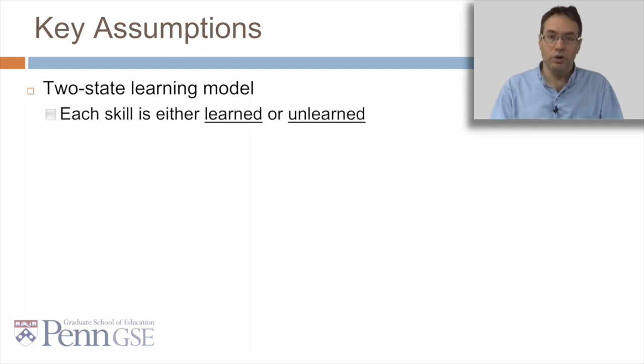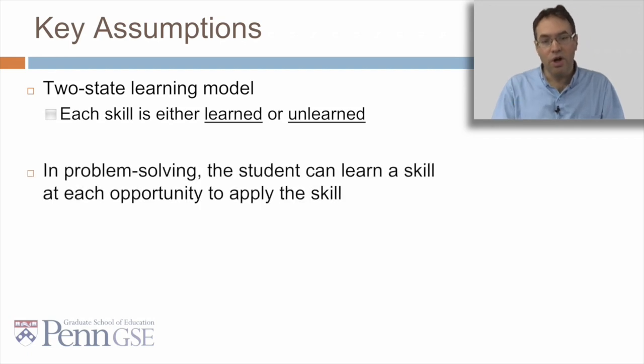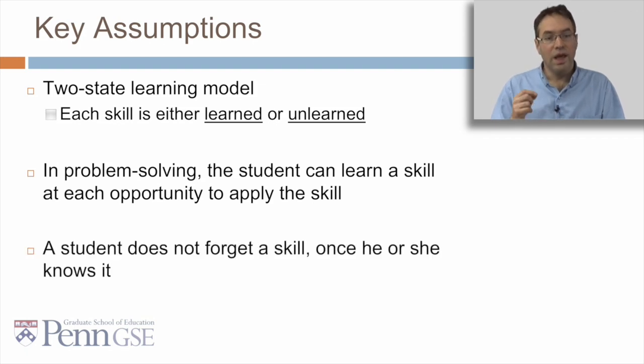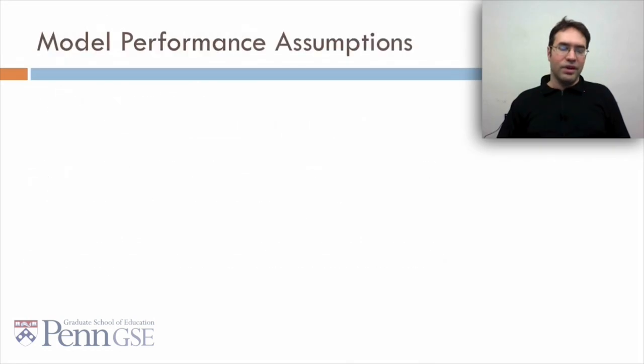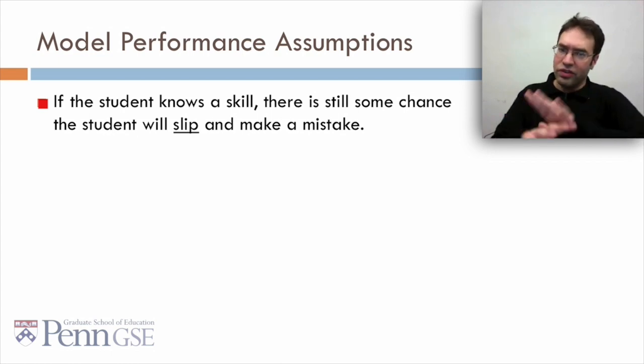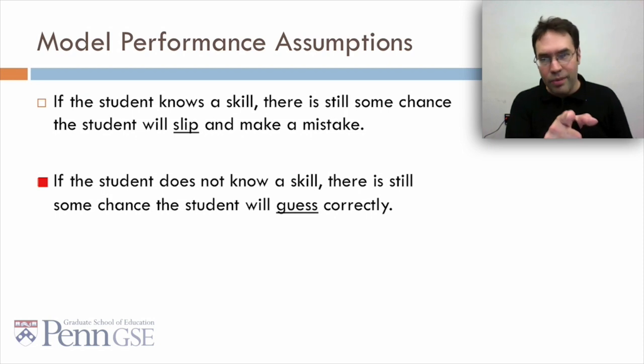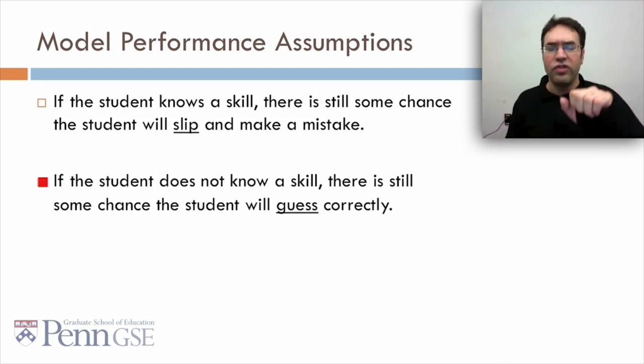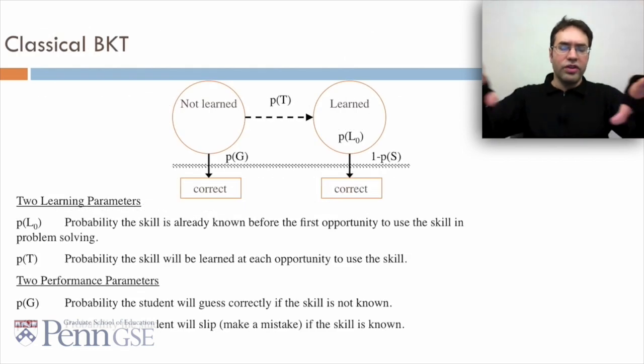From these parameters and the pattern of successes and failures the student has had on each relevant skill so far, we can compute the student's latent knowledge P(Ln), how probable is the student to know the skill they're currently working on. We can also compute the probability P correct that the learner will get the item correct. Another key assumption, a two-state learning model. Each skill is either learned, known, or unlearned, unknown. In problem solving, the student can learn a skill at each opportunity to apply that skill. And a student doesn't forget a skill once he or she knows it. Again, there are extensions of BKT that do allow for forgetting. The model also makes some performance assumptions. First of all, if a student knows a skill, there's still some chance that the student's going to slip and make a mistake. But at the same time, if the student doesn't know a skill, there's still some chance that the student's going to guess and get the correct answer. So there's a link between performance and learning, but it's not a perfect link.